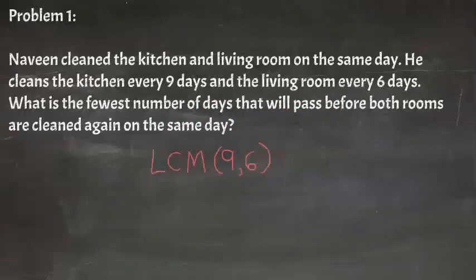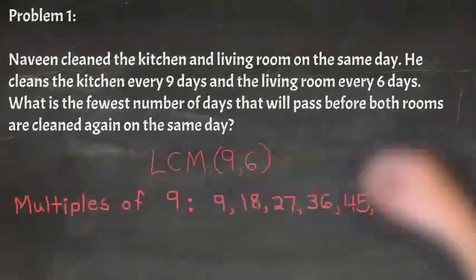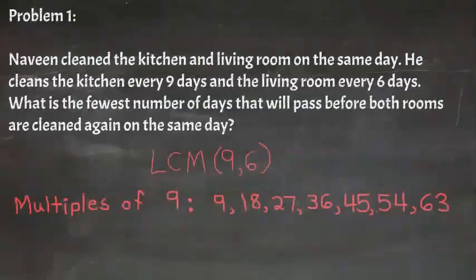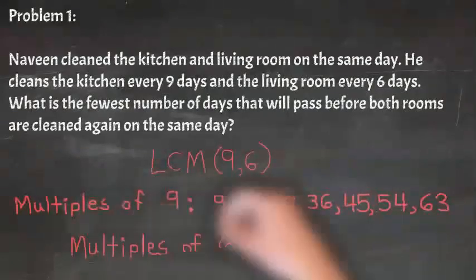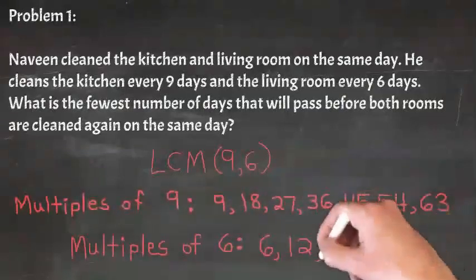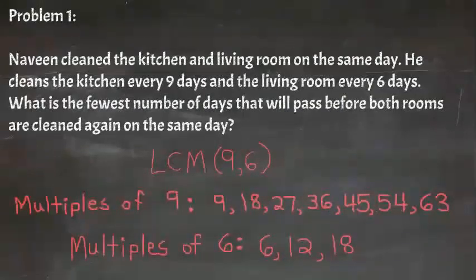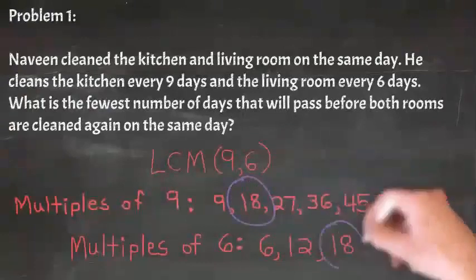First let's list the multiples of 9. We get 9, 18, 27, 36, 45, 54, and 63. We'll stop there for now. Now let's write the multiples of 6: 6, 12, 18. 18 is the first factor they have in common. So our answer is 18 days.